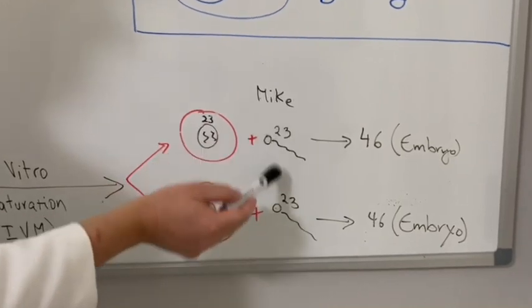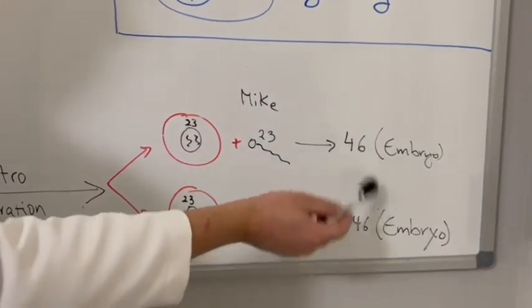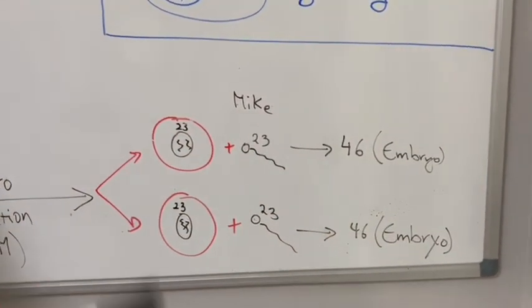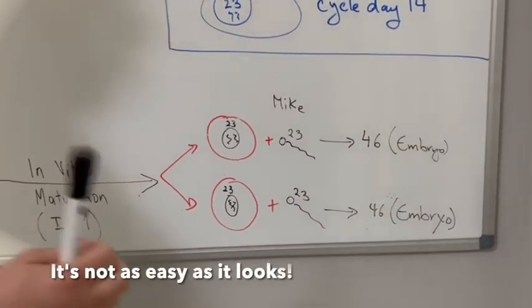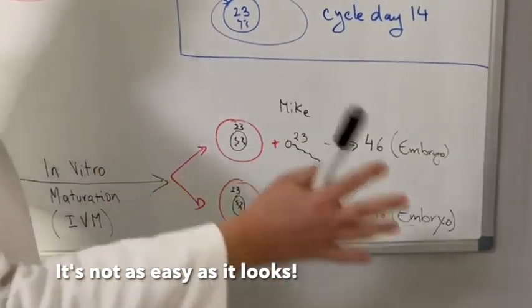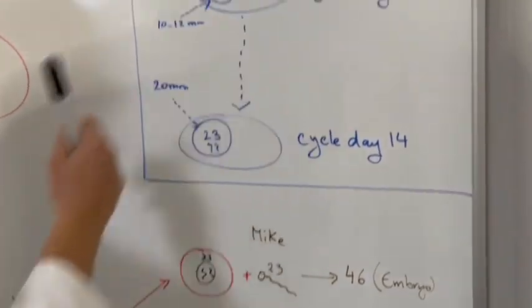And guess what? Now Jess was able to have two eggs, 23 chromosomes each. And when we add Mike's sperm, we're having embryos that are genetically normal. Yeah, we get excited. Now why is this not being done? Well, I'll tell you, it's not as easy as it looks.